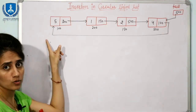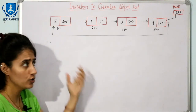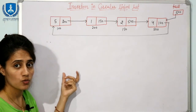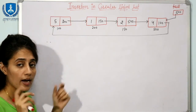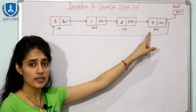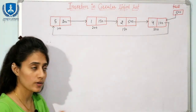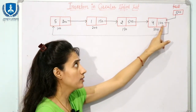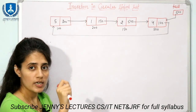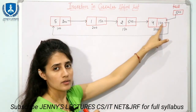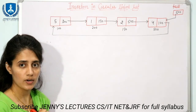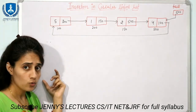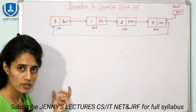First, we will see how to insert a new node at the beginning of the list. Since we don't have a head pointer, we don't directly know which node is the first node. However, in a circular linked list, the last node always contains the address of the first node. We have a tail pointer, so tail->next gives us the address of the first node.